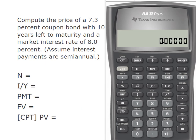So we have a 7.3% coupon bond with 10 years left to maturity and a market interest rate of 8%, and we have semi-annual interest payments. So let's gather up our values for the calculator.